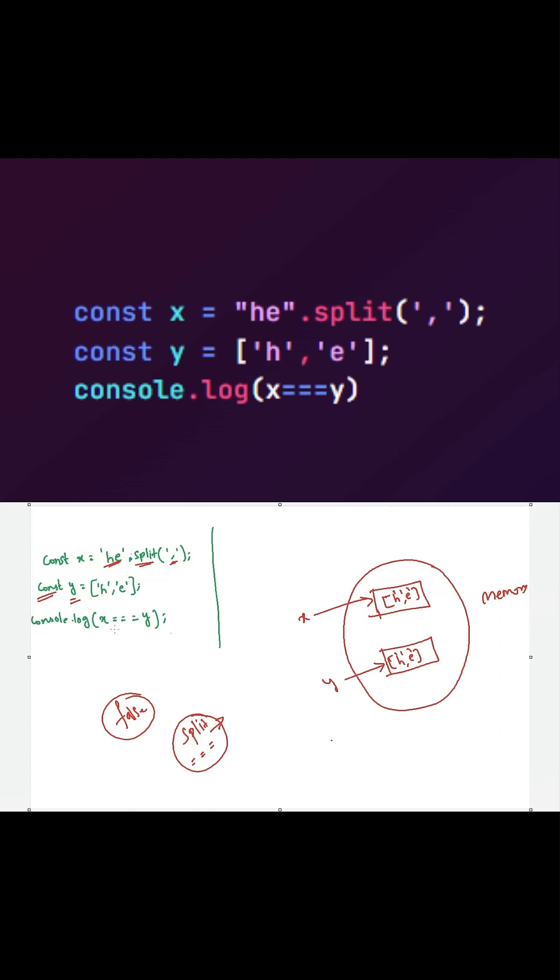Now what happens with this strict equality operator? Whenever you are using a strict equality operator with reference types like objects or arrays, then JavaScript will check whether they are pointing out to the same location in the memory or not.